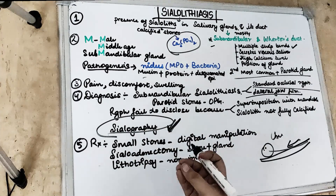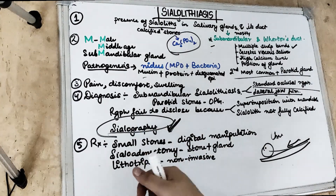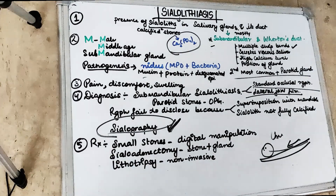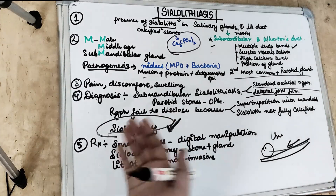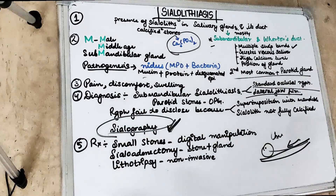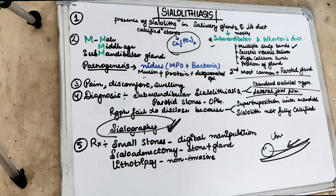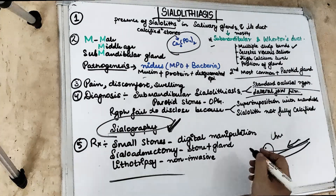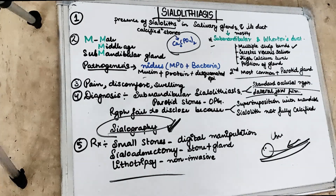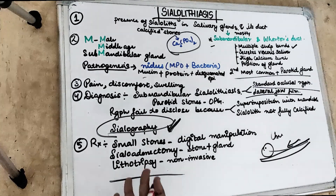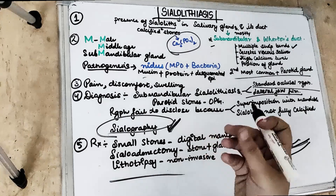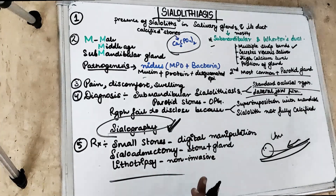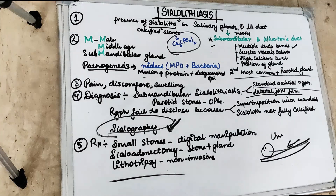Regarding treatment: small stones present in the distal part of the duct can be removed through the orifice by digital manipulation. For large stones, we need a surgical procedure to remove the stone along with part of the gland — this is called sialoadenectomy. If the stone is very large and cannot be removed surgically, we can perform lithotripsy, a non-invasive technique in which we disintegrate and dissolve the large stone. This is how we treat sialolithiasis.